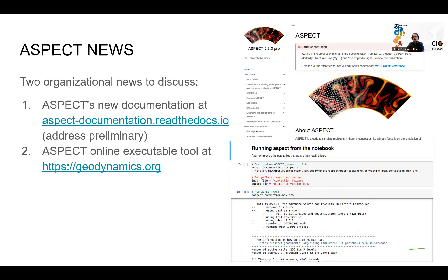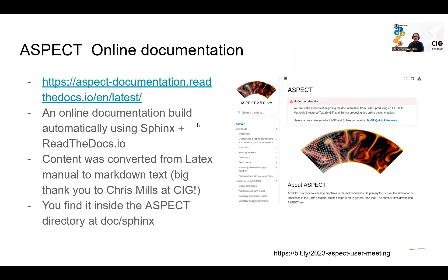Aspect, as well as some other CIG software projects, have evaluated switching to an online documentation system similar to what many other software projects have done. The system is already online, currently at aspect-documentation.readthedocs.io. This may or may not be the final address. We haven't linked to it from the website yet, but you can already see what it's going to look like. It's automatically built from files in the repository using the documentation builder Sphinx and hosted on Read the Docs.